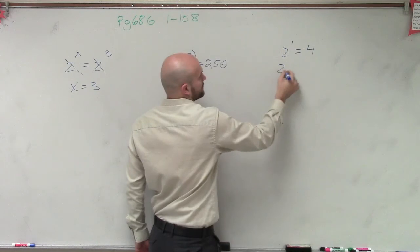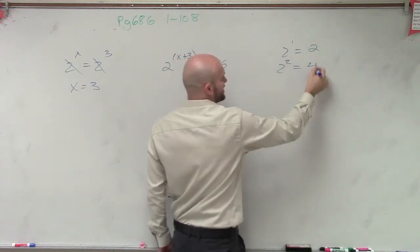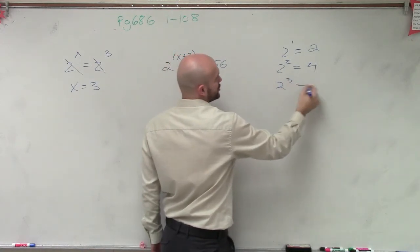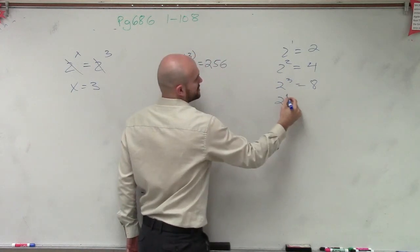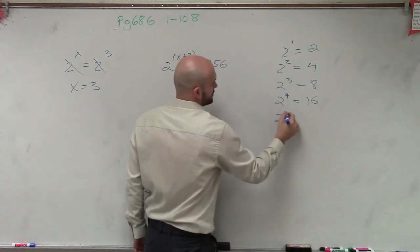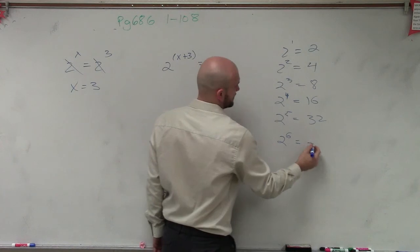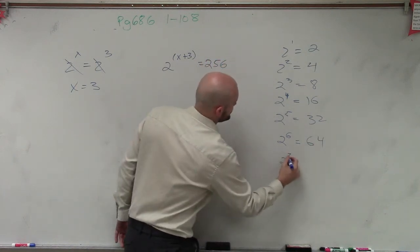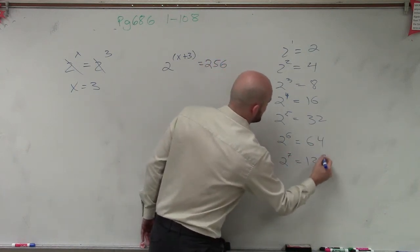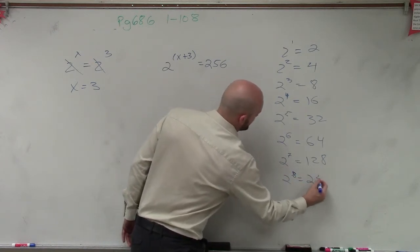2 to the first power is 4. 2 squared, I'm sorry, 2 to the first power is 2. 2 squared is 4. 2 cubed equals 8. 2 to the fourth power equals 16. 2 to the fifth equals 32. 2 to the sixth equals 64. 2 to the seventh equals 128. And 2 to the eighth equals 256.